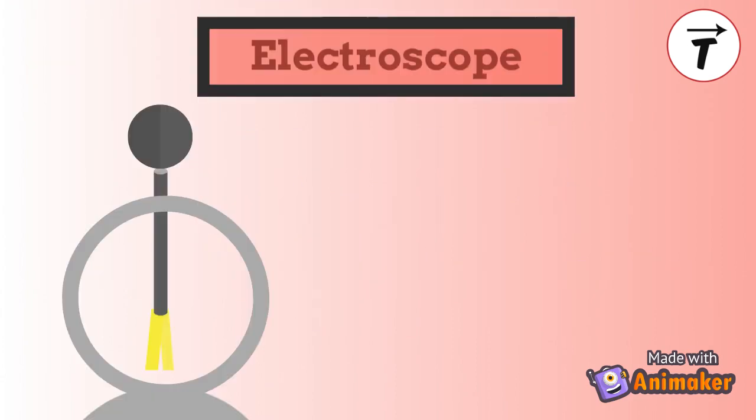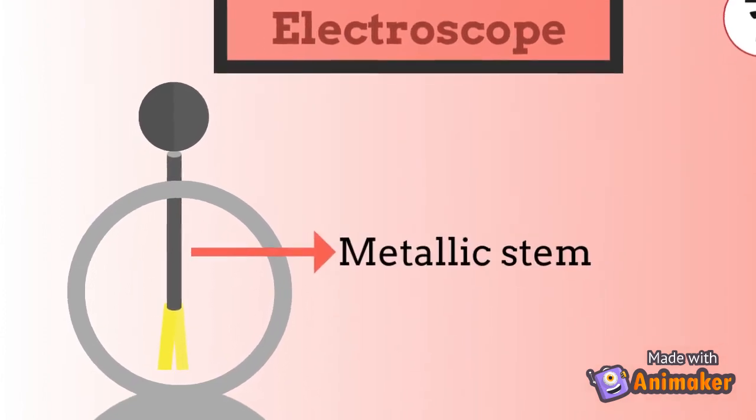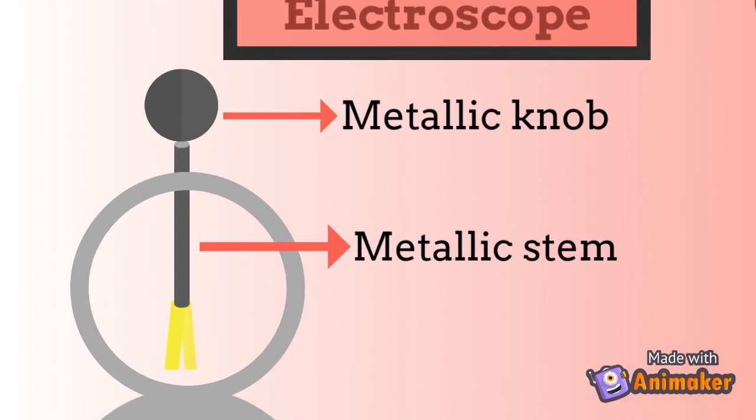First, the electroscope. The electroscope is formed of a metallic stem that is capped with a metal knob. Its lower end carries two very light and mobile metallic leaves. The leaves in the lower part of the stem are inside a glass jar.